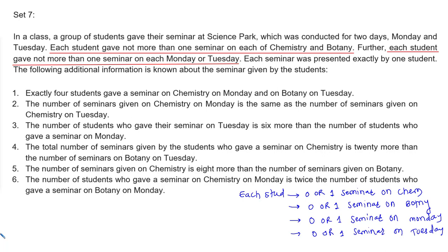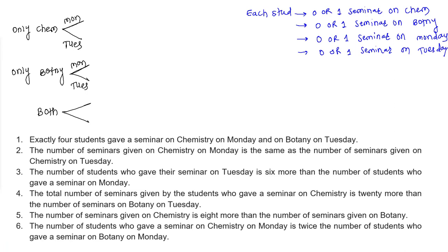After reading this, we see there are 3 types of students: those who gave seminar only on chemistry, those who gave only on botany, and those who gave on both. Let's format a table. Type 1 (chemistry only): A students on Monday, B on Tuesday. Type 2 (botany only): C on Monday, D on Tuesday.